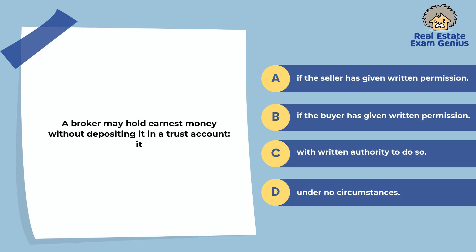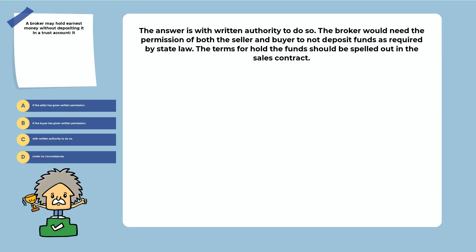A broker may hold earnest money without depositing it in a trust account: if the seller has given written permission, if the buyer has given written permission, with written authority to do so, or under no circumstances. The answer is: with written authority to do so. The broker would need the permission of both the seller and buyer to not deposit funds as required by state law. The terms for holding the funds should be spelled out in the sales contract.